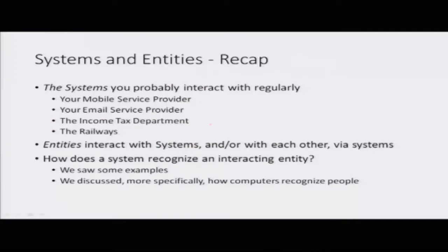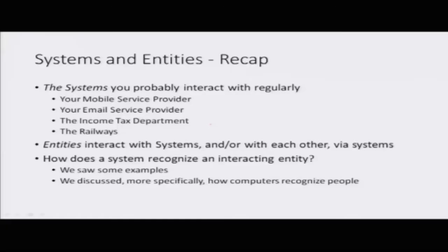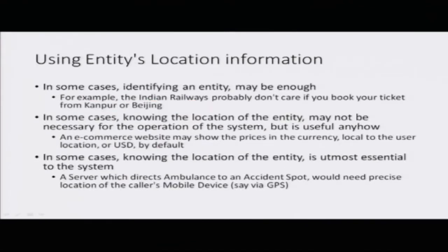We'll start with a brief recap of what we did in the identity management lecture. Consider systems to be computers we interact with in routine life — we gave examples of mobile service providers, email service providers, and railways like IRCTC. Entities are those which interact with systems — basically human beings and devices. Systems are like servers and telephone exchanges. We discussed specific ways in which systems recognize people.